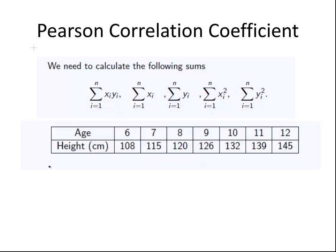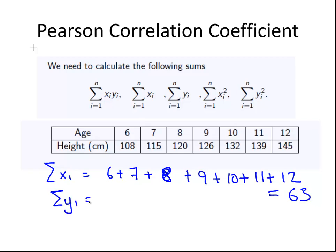Let's bring in the data set. The sum of xi is 6 plus 7 plus 8 plus 9 plus 10 plus 11 plus 12. It's just a bit of calculator work. The answer to that is 63. The sum of the y values: 108 plus 115 plus 120 and so on. The answer to that is 885.